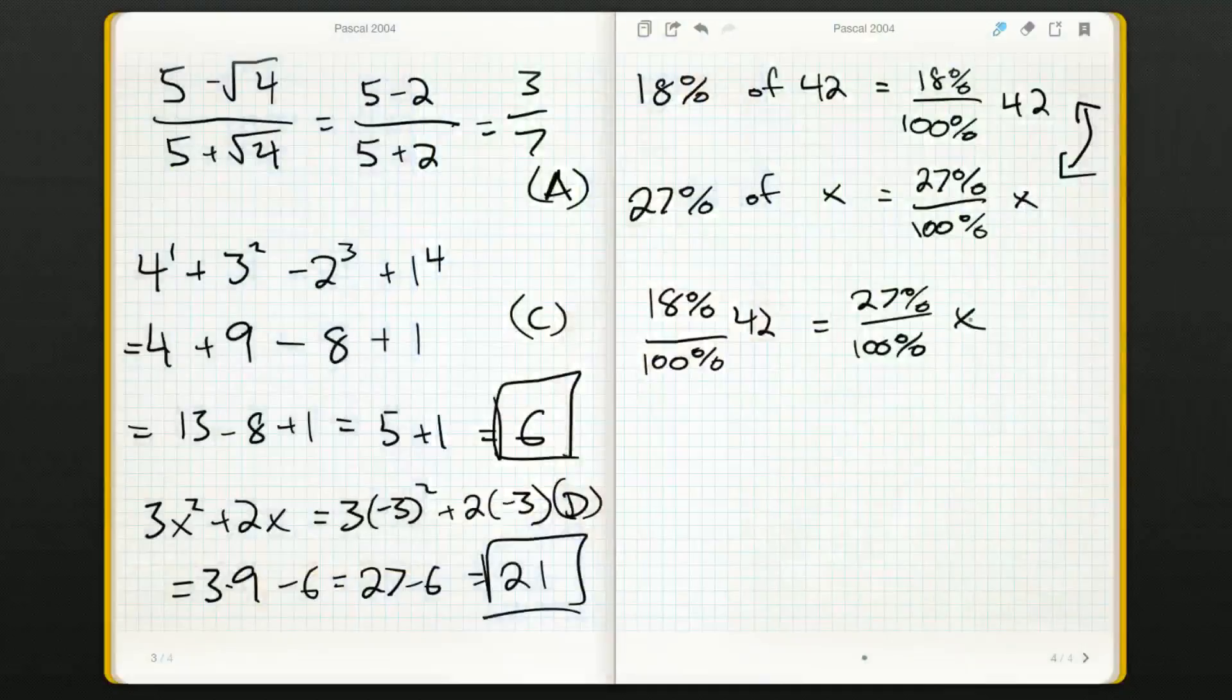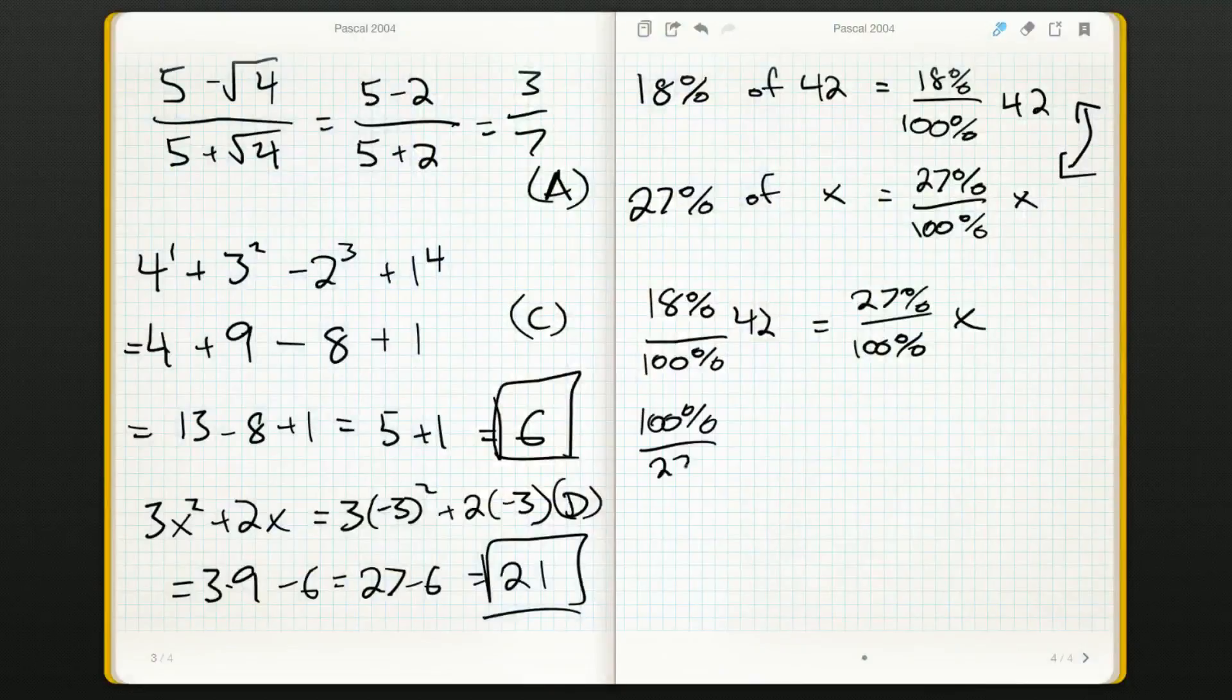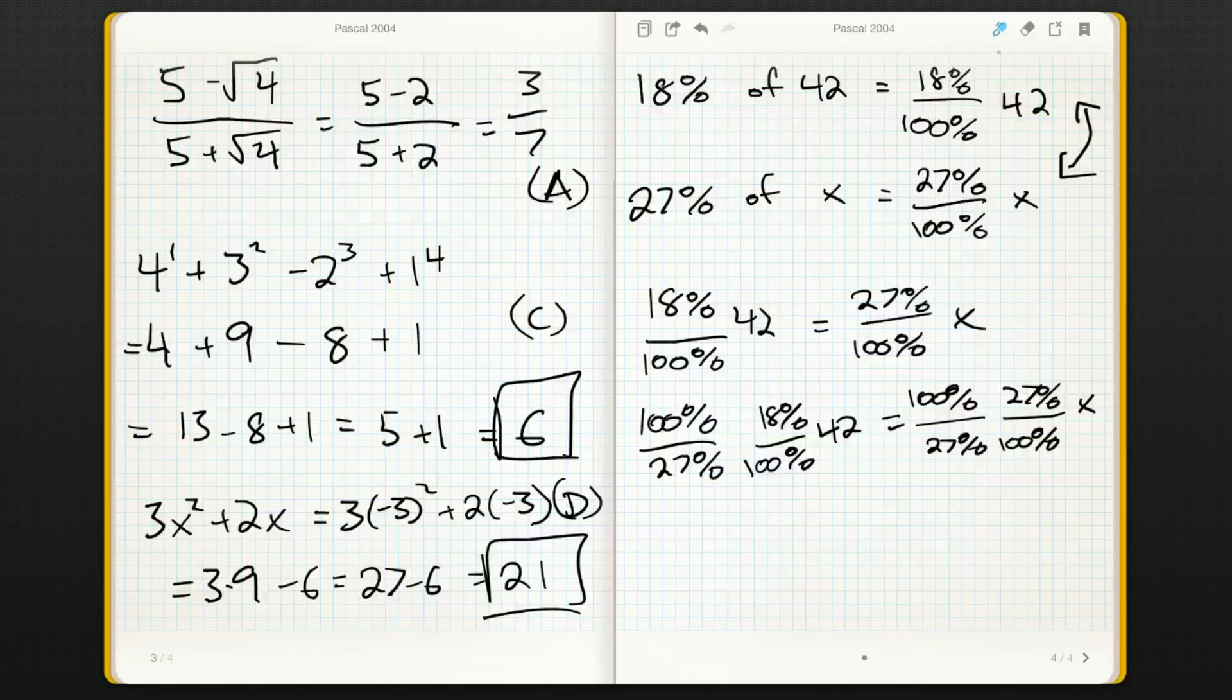The percents cancel out and you'll be left with 18 times 42 equals 27 times x. Since we've got it as fractions, we could multiply both sides by a hundred percent over 27%. There's just so many ways to do this question. I think I'm actually going to do the latter.